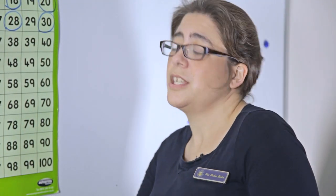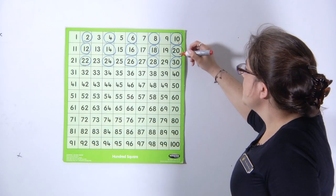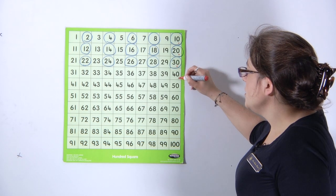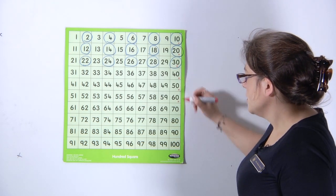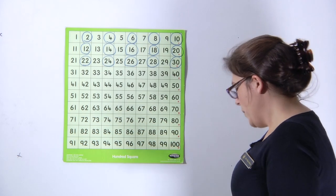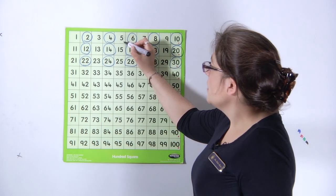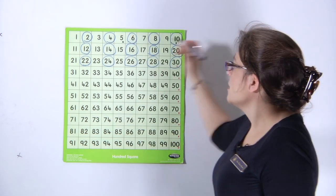They also start to learn that in different counting steps the pattern changes. So when we count in tens, there's always a zero in the units position. And when we count in fives, there can be a five in the units followed by a ten in the units.